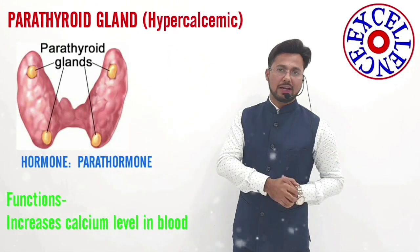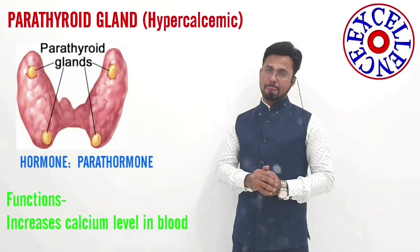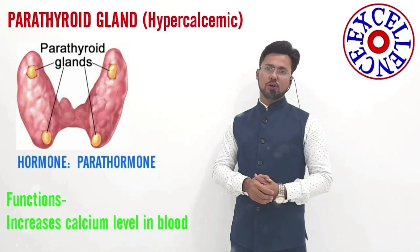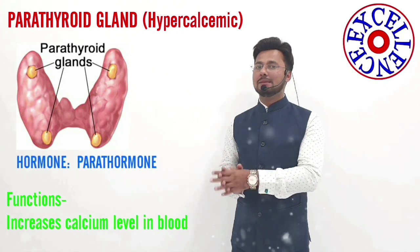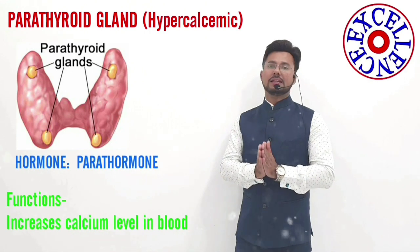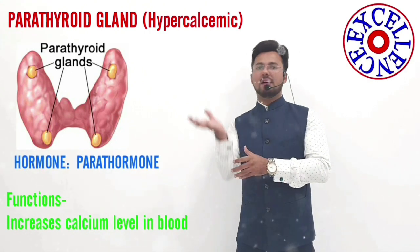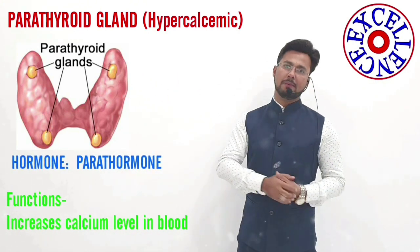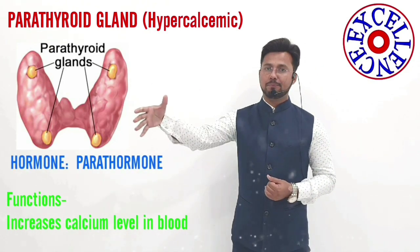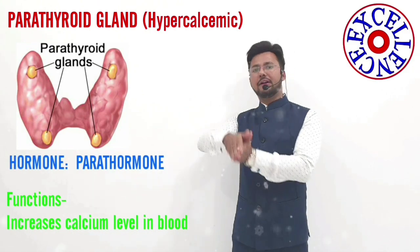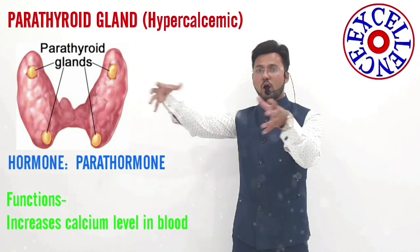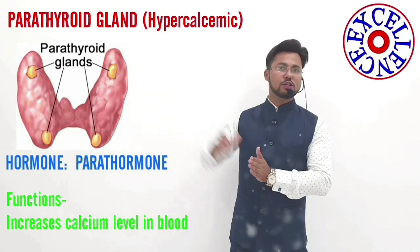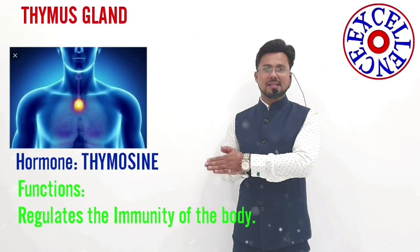The next gland, situated behind the thyroid gland, is the parathyroid gland. It releases a hormone called parathormone, also known as the hypercalcemic hormone. The primary function of parathormone is to increase the calcium level in the blood by resorption of calcium ions from the bones. The presence of calcium in the blood is very important for the clotting or coagulation of blood, and this calcium is brought into the blood by parathormone.